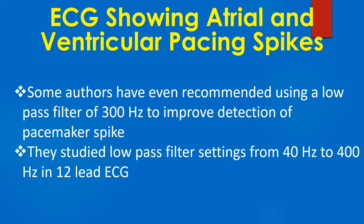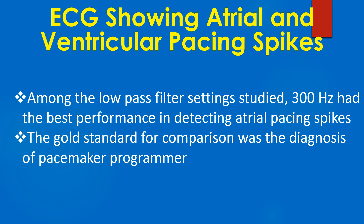Some others have even recommended using a low pass filter of 300 Hz to improve detection of pacemaker spikes. They studied low pass filter settings from 40 Hz to 400 Hz in 12-lead ECGs. Among the low pass filter settings studied, 300 Hz had the best performance in detecting atrial spikes. The gold standard for comparison was the diagnosis of the pacemaker programmer.